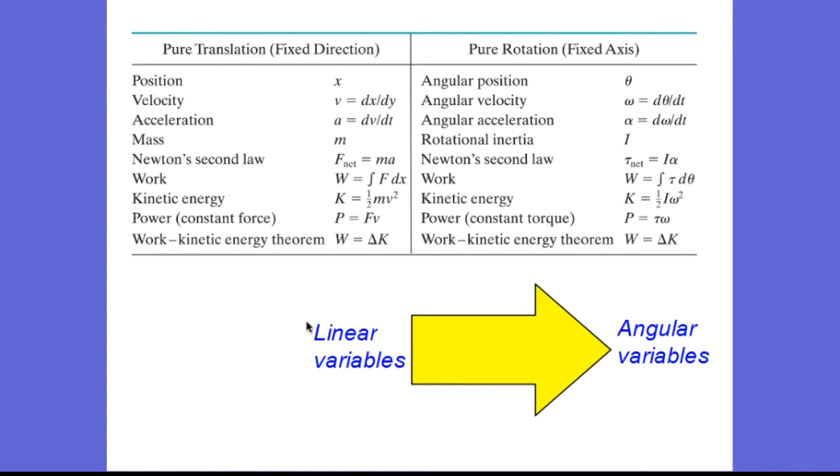And table 10-3 on page 261 now summarizes all that we've learned about translating the translational equations and variables to rotational equations and variables. Position x translates to angular position theta. Linear velocity translates to angular velocity omega. Linear acceleration a translates to angular acceleration alpha. Mass translates to moment of inertia. Newton's second law for linear motion was net force equals mass times acceleration. Now, for rotational motion, net torque equals I times alpha.